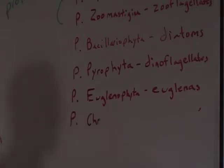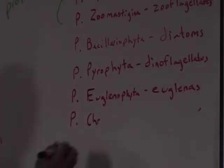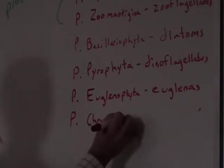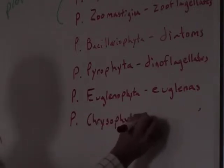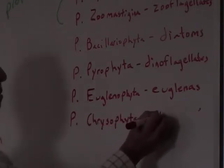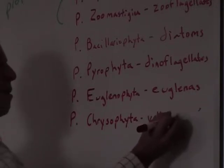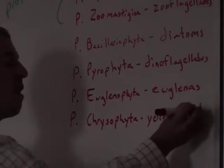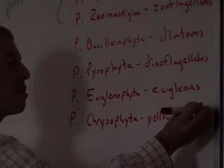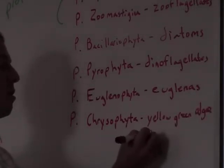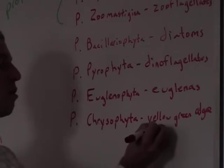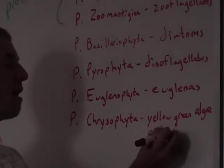Chrysofita are the yellow, green, or golden brown algae.